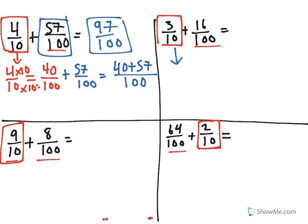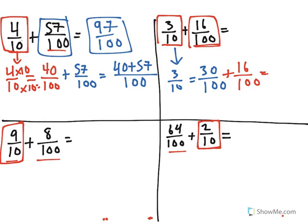Repeating the process, I know that three tenths is equal to 30 over 100. Let's then take our other fraction down here and add it: 16 one hundredths. We have 30 plus 16. Add the numerators. The denominator stays the same to get our answer of 46 one hundredths.